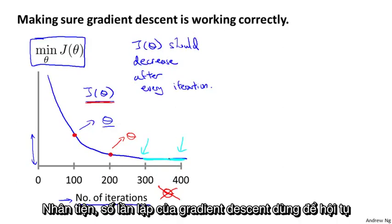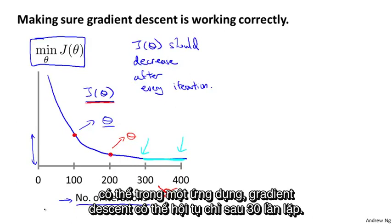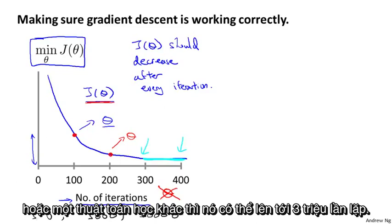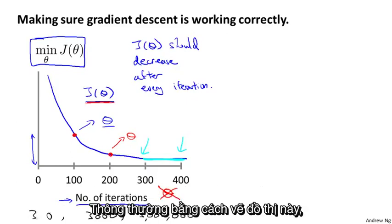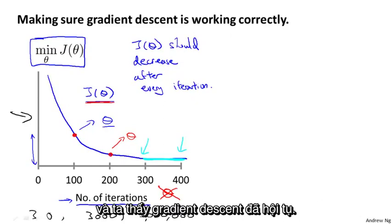By the way, the number of iterations that gradient descent takes to converge can vary a lot depending on the application. For one application, gradient descent may converge after just 30 iterations. For a different application, it may take 3,000 iterations. For another learning algorithm, it may take 3 million iterations. It turns out to be very difficult to tell in advance how many iterations gradient descent needs to converge, and it's usually by plotting this sort of plot — plotting the cost function as we increase the number of iterations — that I try to tell if gradient descent has converged.